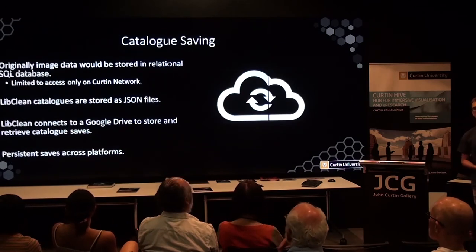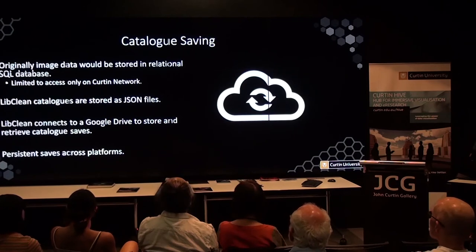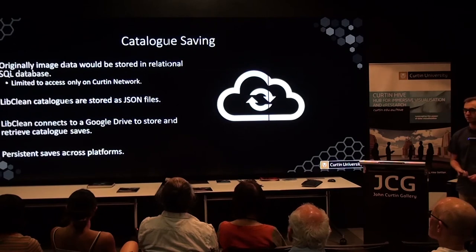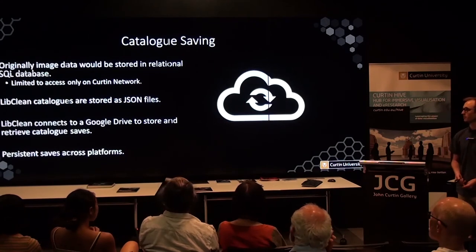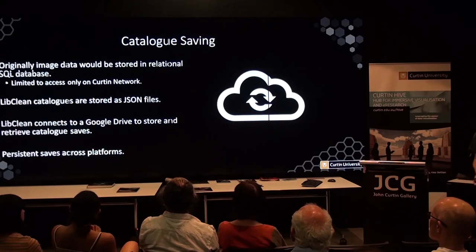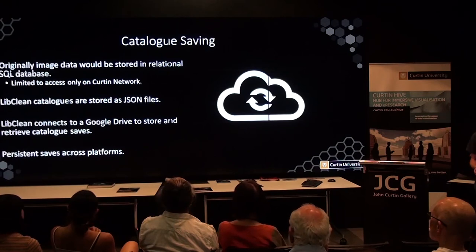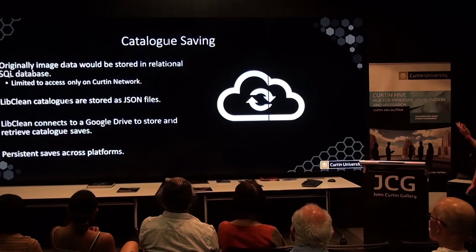Now that we had extracted relevant information, we needed to save it in a form accessible by anyone using the package. Originally this was going to be an SQL database, but that would be limited to access only on the Curtin network. Instead, we saved the catalogue as a JSON file and installed Google Drive connectivity into LibClean, which allows us to save catalogue files on a Google Drive accessible via an API — essentially downloading a save file — giving us persistent saves across any LibClean usage.